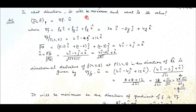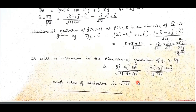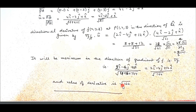The further question asks: in what direction will the derivative be maximum and what is its value? We know the derivative is maximum in the direction of the gradient. Here the gradient is 2i − 4j + 12k, so the direction is this divided by its magnitude, and the value of the derivative in this direction is |∇f| = √164.